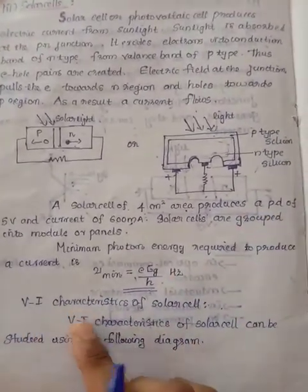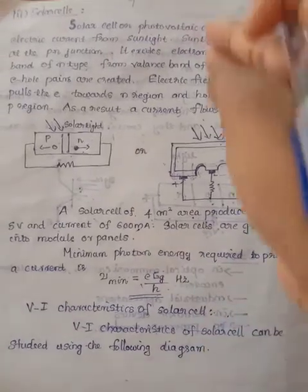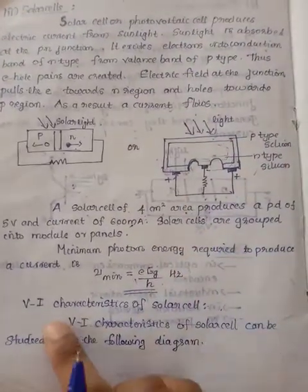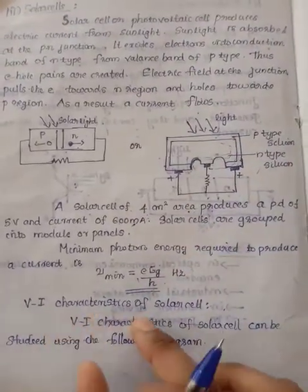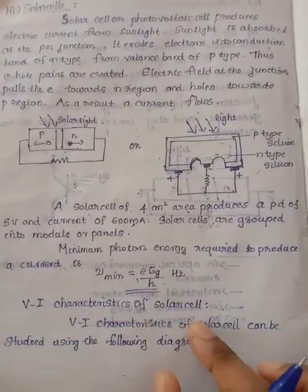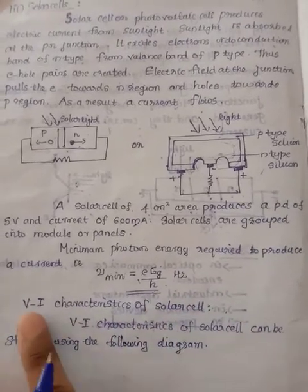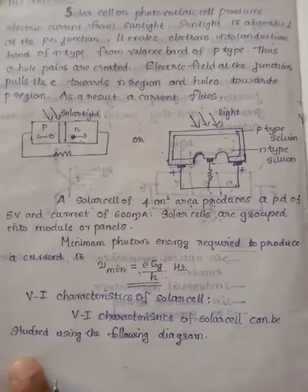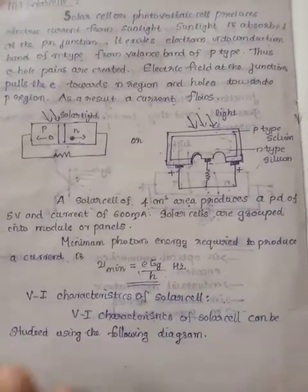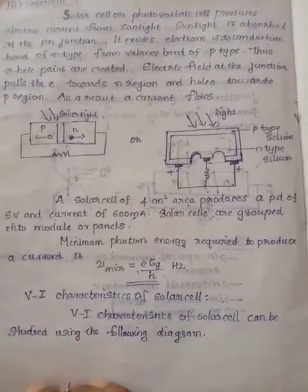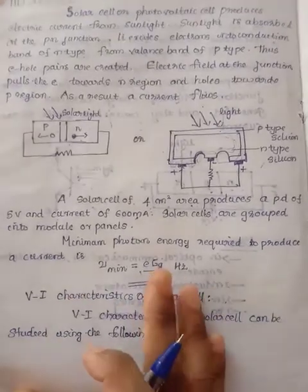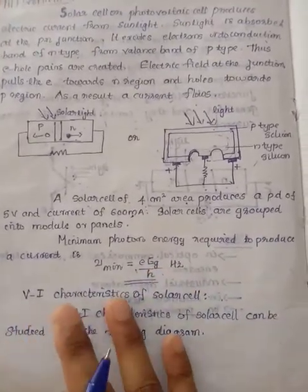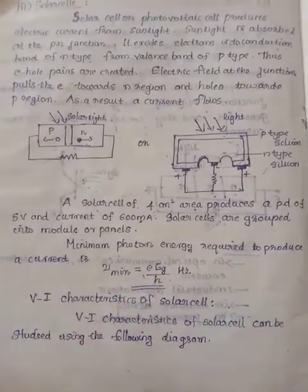The V-I characteristics of a solar cell describe the working of the solar cell. It is the voltage-current relationship — voltage and current are measured and used to plot a graph, which shows the characteristics of a solar cell.